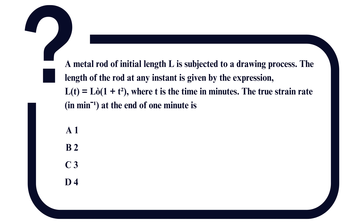The question is: a metal rod of initial length L0 is subjected to a drawing process. The length of the rod at any instant is given by the expression Lt = L0 into (1 + t²), where t is the time in minutes. The true strain rate in per minute at the end of one minute is: option A — 1, option B — 2, option C — 3, and option D — 4.